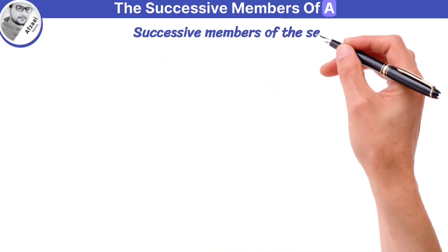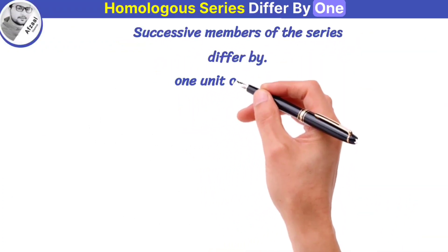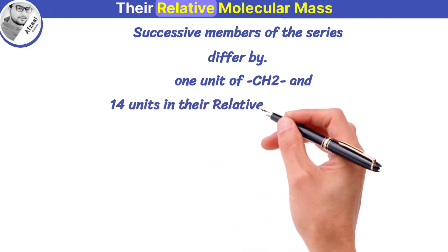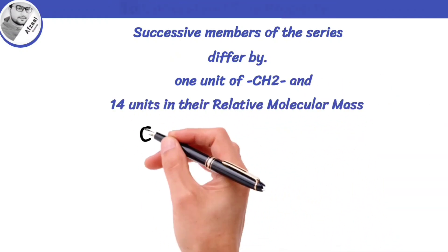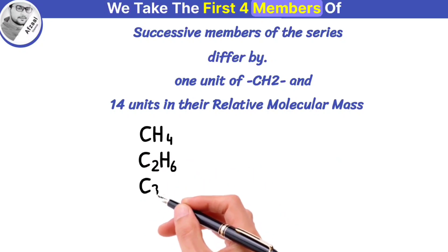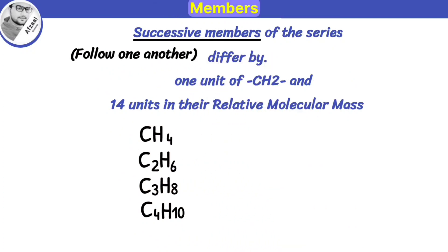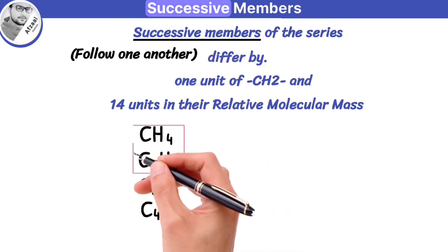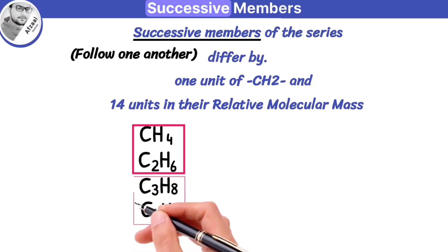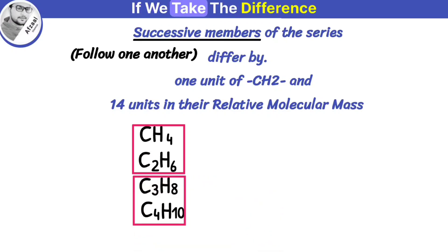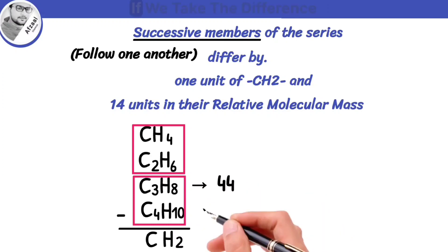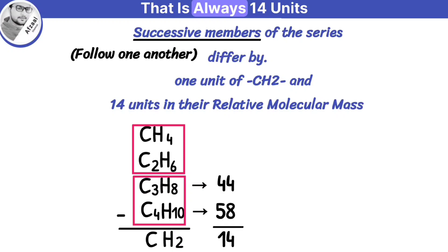The successive members of a homologous series differ by 1 unit of CH2 and 14 units in their relative molecular mass. To understand this property, we take the first 4 members of alkanes. The compounds that follow one another are known as successive members. So methane and ethane are successive members. Similarly, propane and butane are successive members. If we take the difference between formulas of any two successive members of the series, that is always CH2. Similarly, if we take the difference between molecular masses of successive members, that is always 14 units.